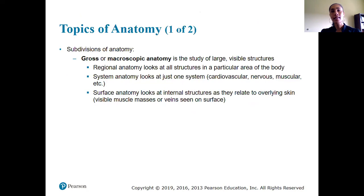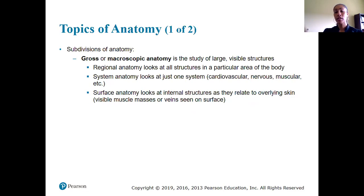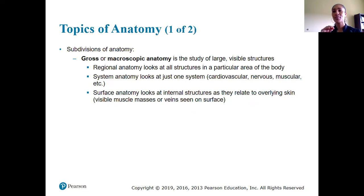When studying anatomy, we can break the discipline into macroscopic anatomy, also called gross anatomy, and microscopic anatomy. With gross or macroscopic anatomy, we're looking at large visible structures — mostly ones we can see with the naked eye. Regional anatomy looks at parts of the body in a particular area, such as the chest. Systemic anatomy looks at just one organ system — cardiovascular, endocrine, and so on. Surface anatomy looks at internal structures visible underneath the skin, such as veins, bones, and muscle tissue.